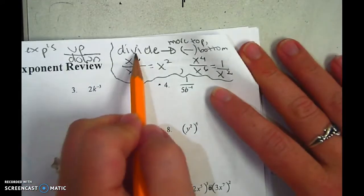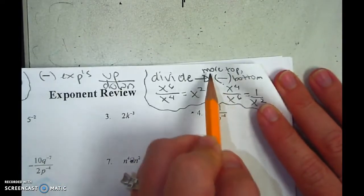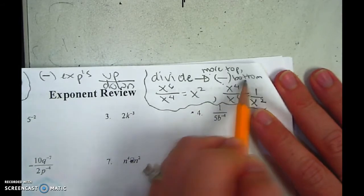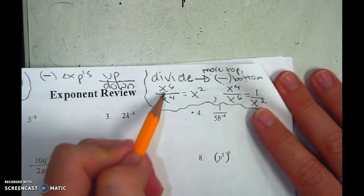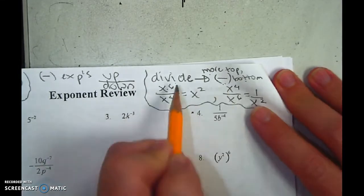Whenever I'm dividing, it's subtract, but I like the idea of are there more on top or are there more on bottom. And here's what I mean by that. For x to the 6th over x to the 4th, since it's divide, you can subtract, 6 minus 4 is 2.